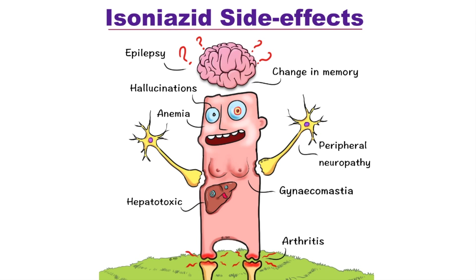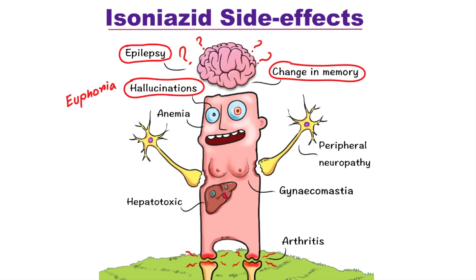This unique picture will help you remember all the important side effects. Isoniazid maximally crosses the blood-brain barrier and is associated with multiple neuropsychiatric symptoms like memory loss, hallucination, euphoria, or even epilepsy.